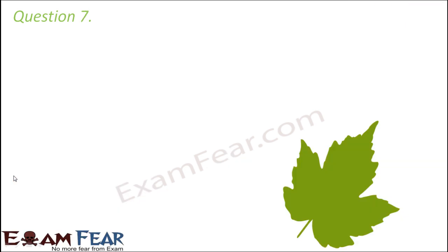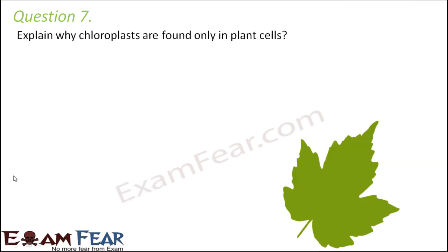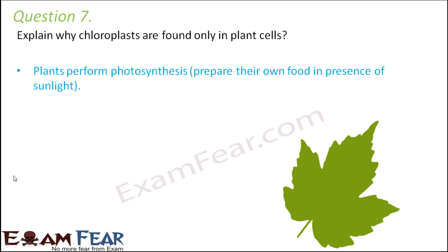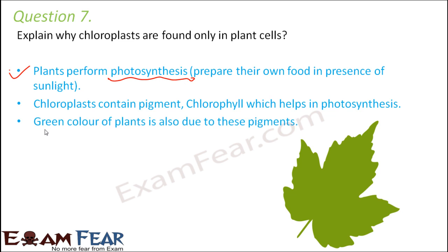Question number seven: explain why chloroplasts are found only in plant cells. Chloroplasts contain chlorophyll, and chlorophyll helps in photosynthesis. Animals do not perform photosynthesis, but plants do — so they need chlorophyll. That is why chloroplasts are present only in plant cells. These chloroplasts also impart green color to plants because the chlorophyll pigment is green in color.